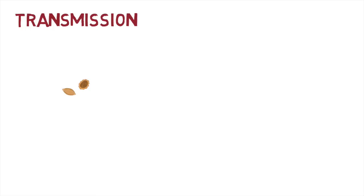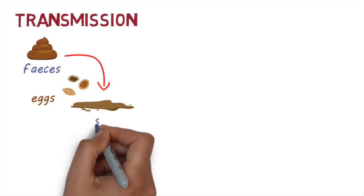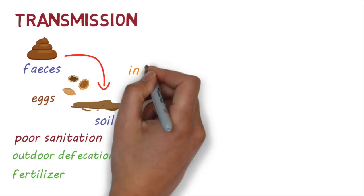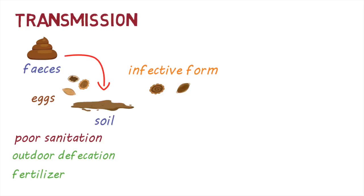Soil-transmitted helminths are transmitted by eggs that are passed in the feces of infected people. The soil can be contaminated in areas where there's poor sanitation and people defecate outside, or when human feces is used as fertilizer. Once in the soil, roundworm and whipworm eggs mature into an infective form, which can take a few weeks. Hookworm eggs, on the other hand, mature and hatch into larvae that have the ability to penetrate skin.